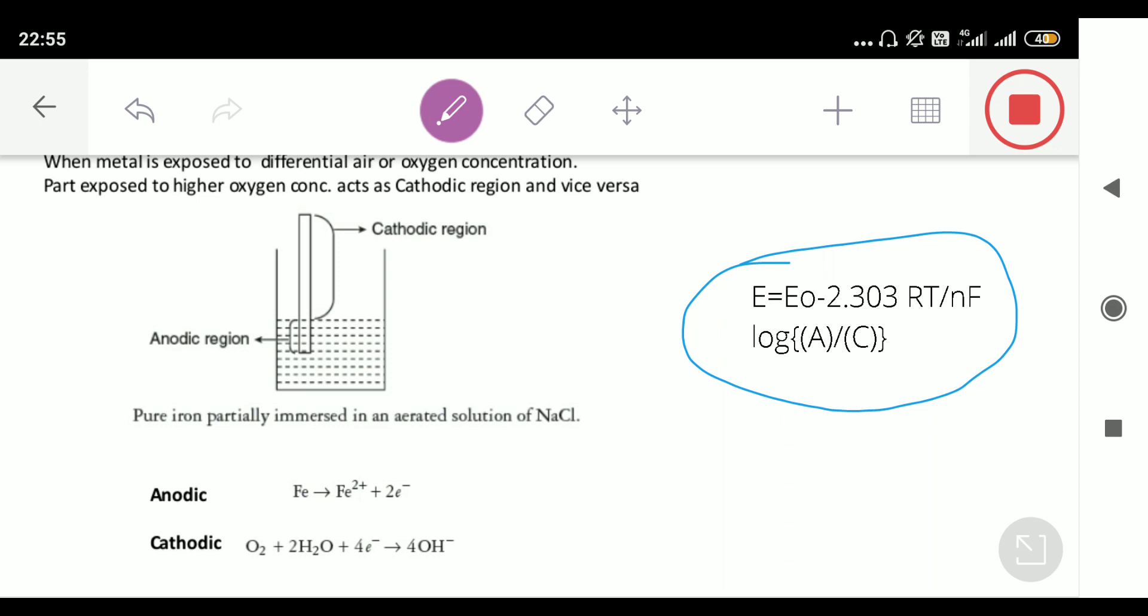In this case, we have same metal, so E0 difference is going to be zero. When metal is half immersed in water and half of the part is above water, the part which is immersed in water is surrounded by less number of oxygen.